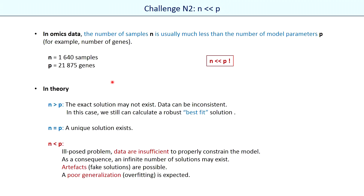Now let's talk about the second challenge we often encounter with omics data analysis. In omics data the number of samples is usually much less than the number of model parameters — the number of genes in our case — and the difference in sizes may be more than 10 times. In theory we can train a mathematically correct model only if the number of parameters is less than or equal to the number of samples. Otherwise the data are insufficient to properly constrain the model. The problem is ill-posed and we may obtain an infinite number of solutions which may be artifacts. Usually the model is strongly overfitted in this case.